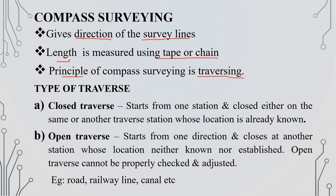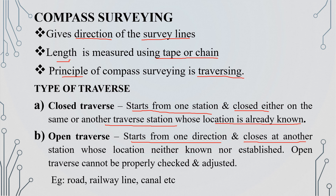The type of traversal is closed traversing as well as open traversing. In closed traversing, you start and close at the same station. Open traversing goes in one direction and does not close at the same station — it is established in one direction and called open traverse.